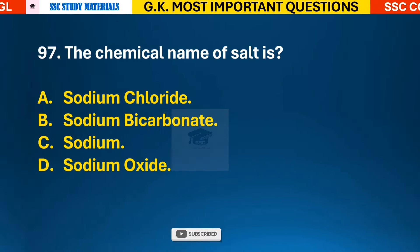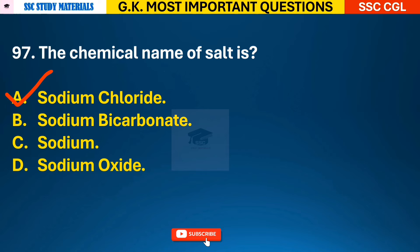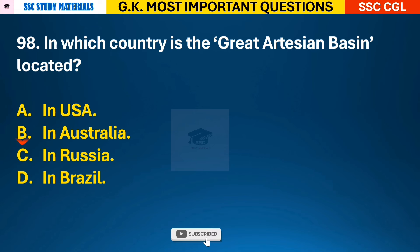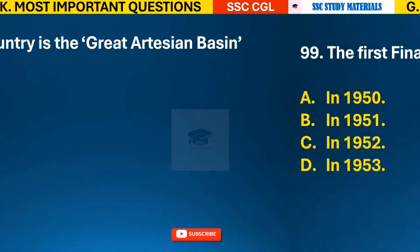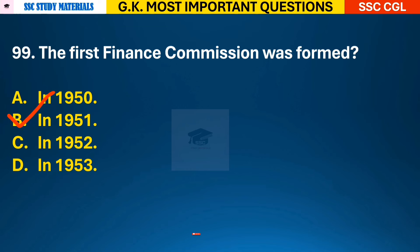Question 97: The chemical name of salt is? Answer A - the chemical name of salt is sodium chloride. Question 98: In which country is the Great Artesian Basin located? Answer B - it is located in Australia. Question 99: The first Finance Commission was formed? Answer B - it was formed in the year 1951.